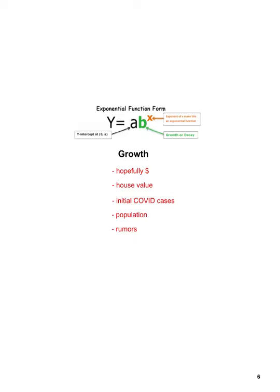The idea of exponential growth or decay is really determined by that value of b and whether it's greater than 1, less than 1, or exactly 1. Growth examples include money and investing, home values, COVID cases — which were initially on an exponential growth pattern — population, and rumors, because it goes from one person to two, two to four, four to eight, and so forth.